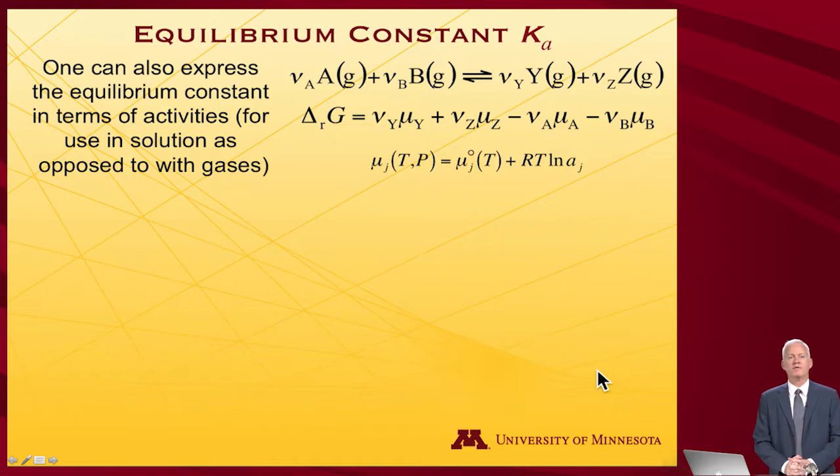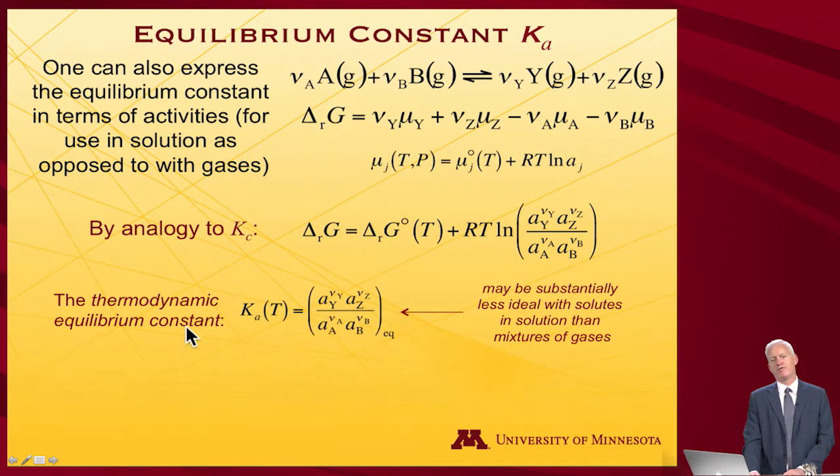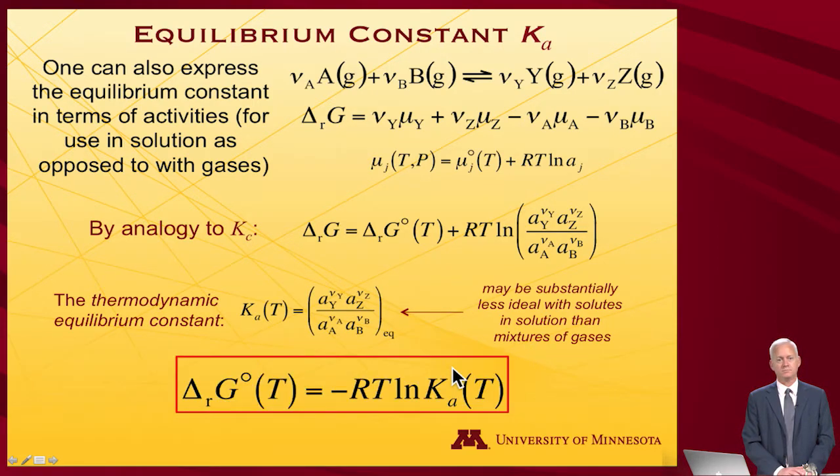If I multiply and divide each C by a standard state concentration, one molar for example, then I can have an expression relating Kp and Kc. I want this to be unitless, so by dividing everything by one molar as many times as I need to, I'll get a unitless Kc. Kc is equal to the concentration of species divided by C0 to get out the units.